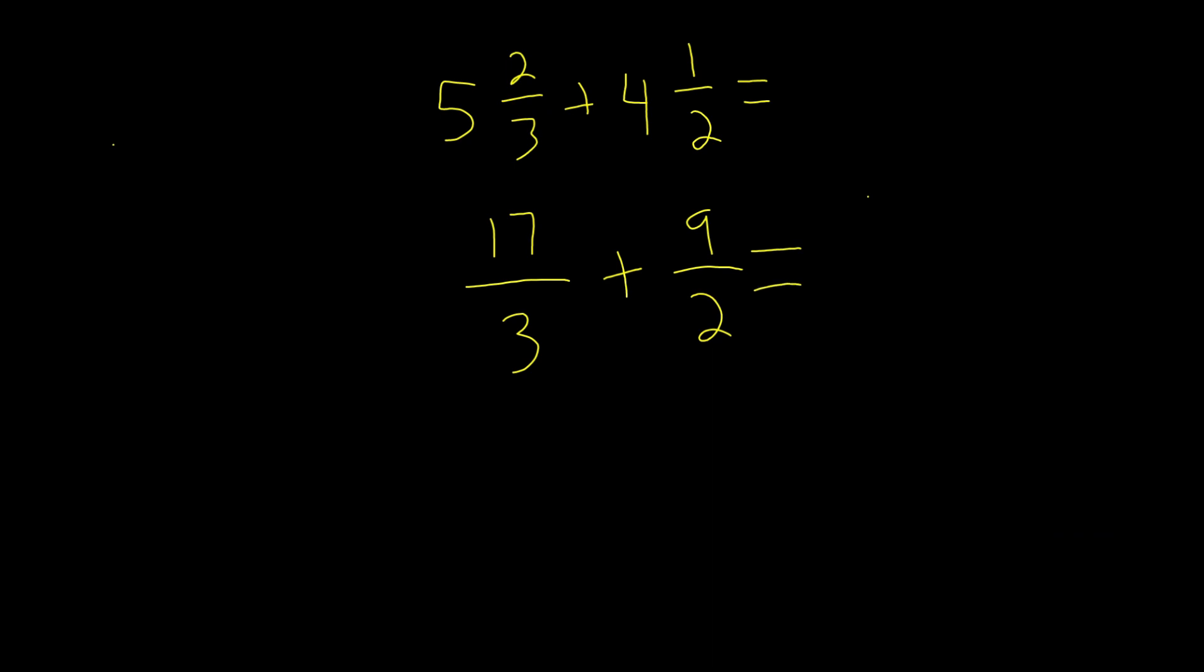And now we're going to simply add these two, just like normal fractions. So 3 times 2 is 6, that's our denominator. 17 times 2 is 34, plus 9 times 3 is 27. 34 plus 27, that's 61. And this is our answer to this in improper fraction form.